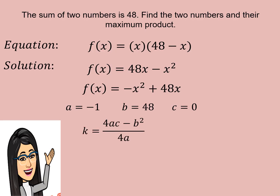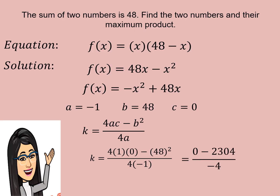Then let us substitute into K is equal to (4AC minus B squared) all over 4A. We obtain K is equal to (4 times negative 1 times 0 minus the square of 48) divided by (4 times negative 1). 4 times negative 1 times 0 is equal to 0. The square of 48 is 2,304, and 4 times negative 1 is negative 4. So negative 2,304 divided by negative 4 gives us 576, and this is the maximum product.